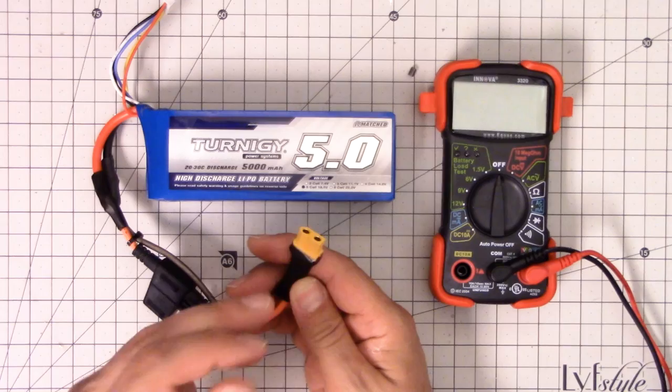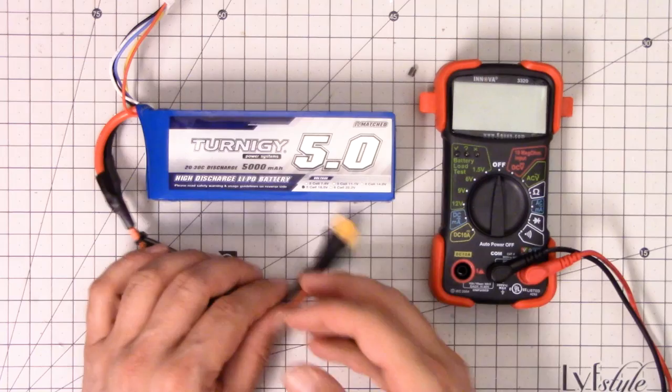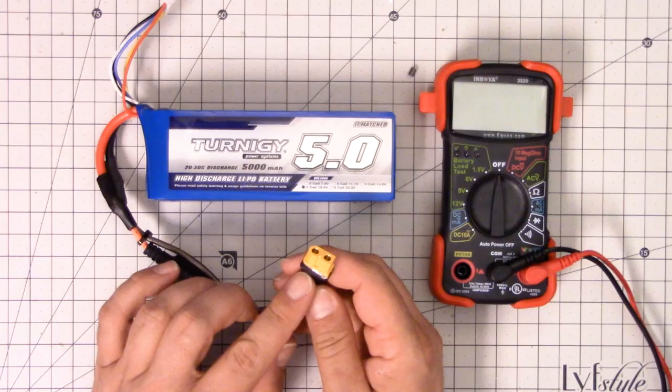If you've ever accidentally wired up an ESC backwards, raise your hand. I've done it too. Then you know you cannot apply reverse voltage, really, for any time at all without smoking things.